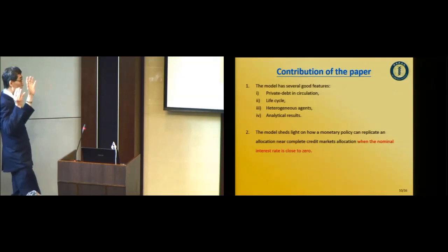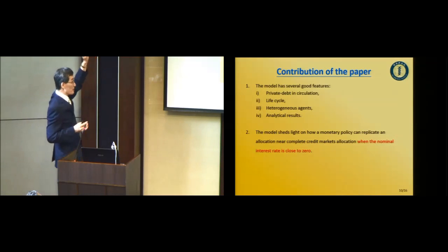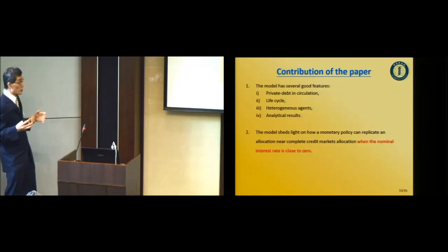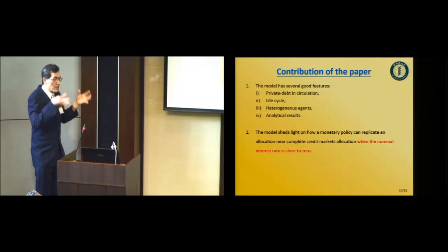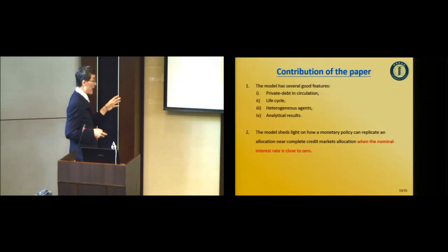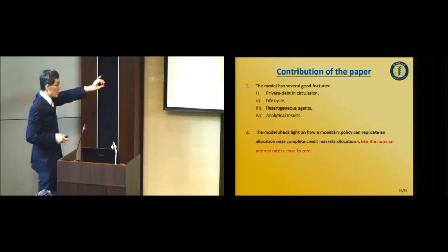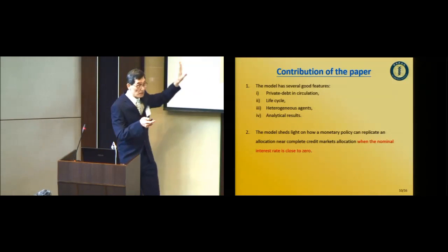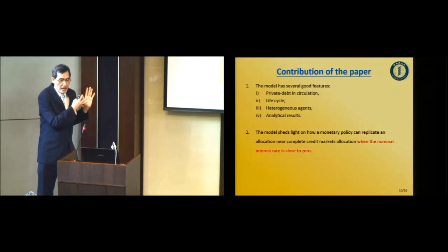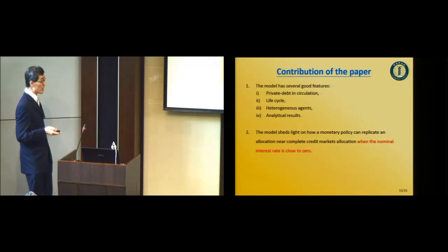The paper has several good features, including private debt, securitization, life cycle, and in particular heterogeneous aging — so you can study distribution problems. In particular, the paper has analytical results, which is good. The paper shows how a monetary policy could replicate the allocation near a complete credit market allocation, especially in the case when interest rates are low — as in the period after 2008. That's a nice feature of the paper.